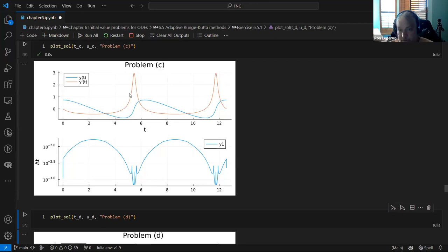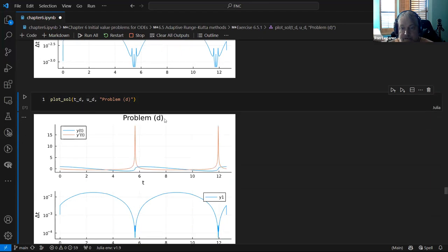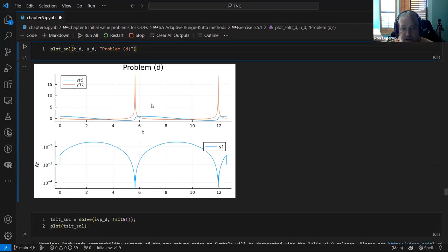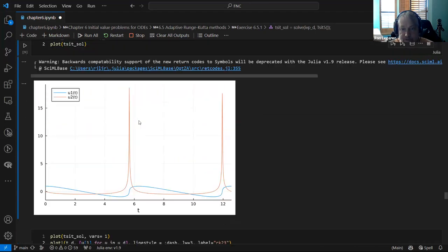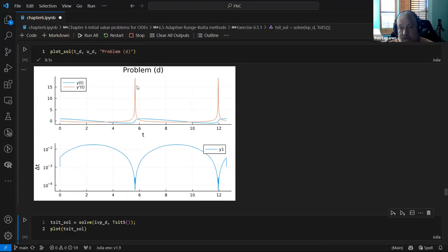And then finally, for the hardest one of all, it actually goes down by two orders of magnitude on the time step during the big spikes. And okay, well, I mean, I don't know. Is it doing it right? I don't know.